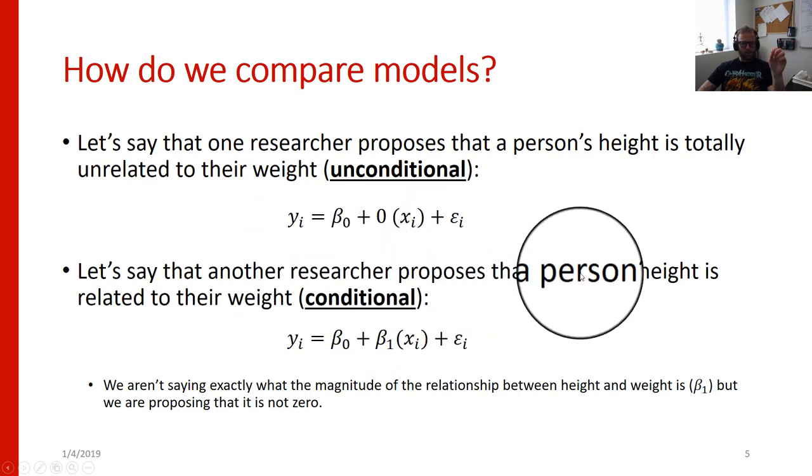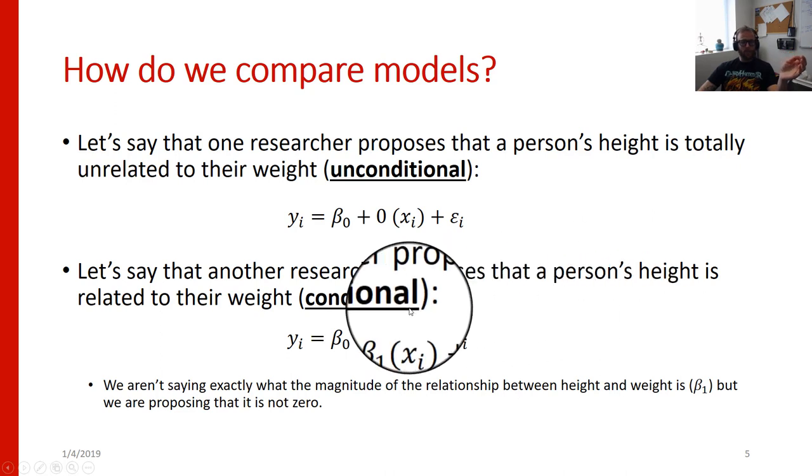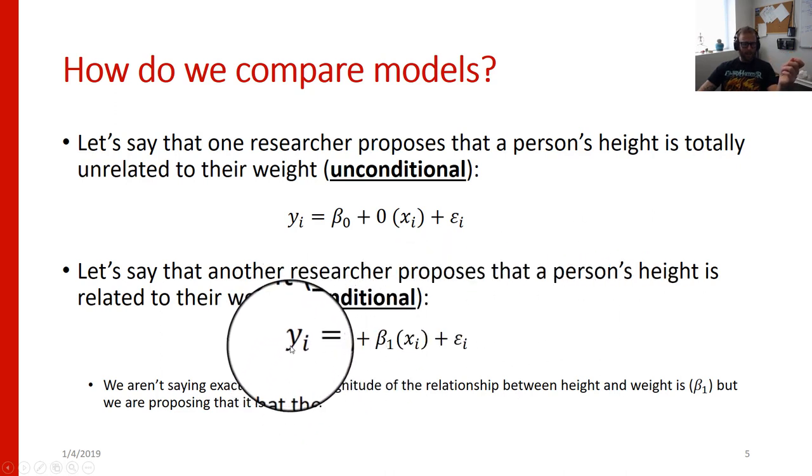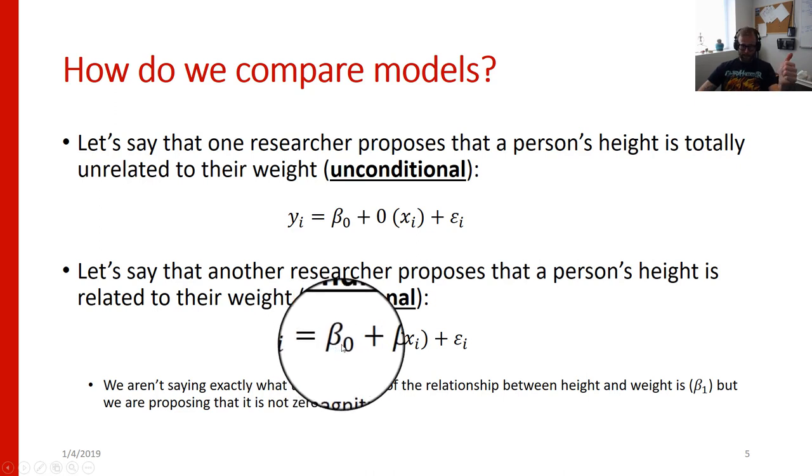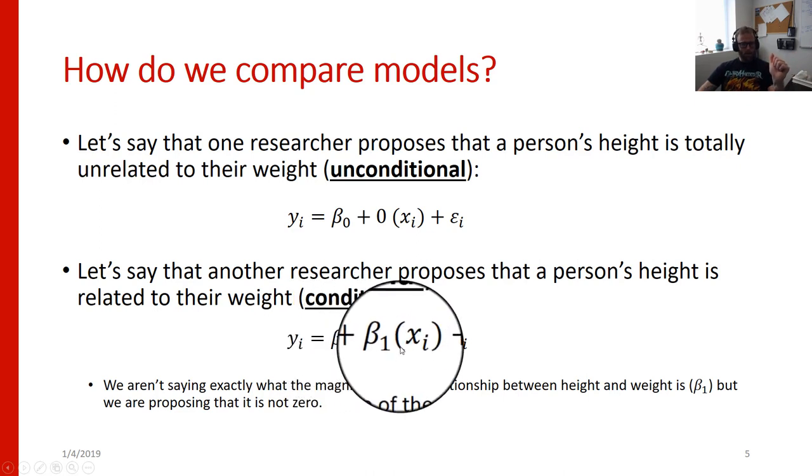Let's say that another researcher proposes that a person's height is related to their weight. So this would be a conditional model. So they're going to estimate a person's height y sub i is equal to some intercept beta 0 plus a slope beta 1 times the person's weight x sub i. So in this situation the person's weight actually has an influence on our estimate for their height because it is being multiplied by some nonzero value. And we're going to update or incorporate this person's weight into our estimate for a person's height. And again it's probably going to have some amount of error it's probably not going to be a perfect explanation of a person's height. But is it going to be better than the unconditional model? And how do we compare these two different sets of estimates?